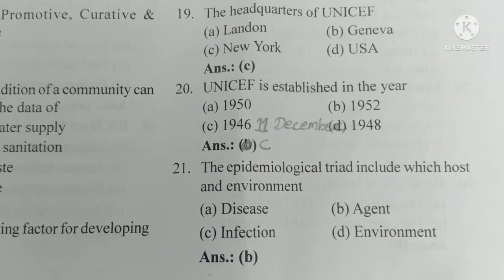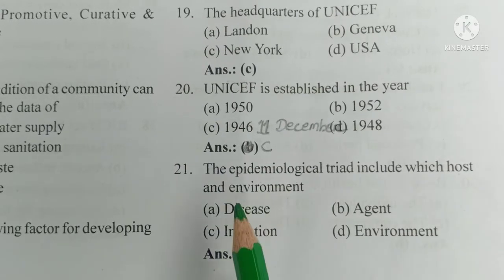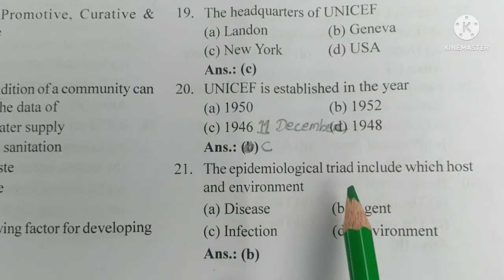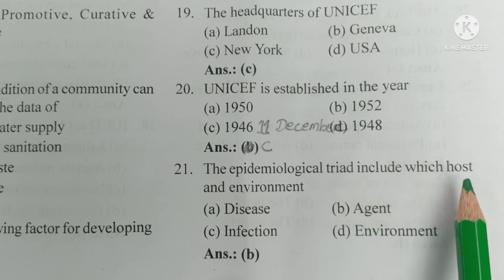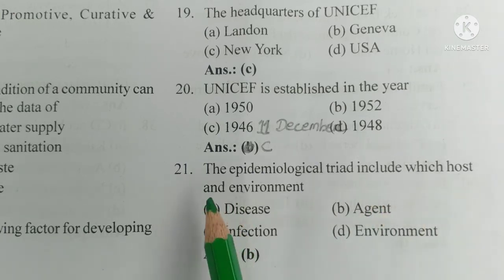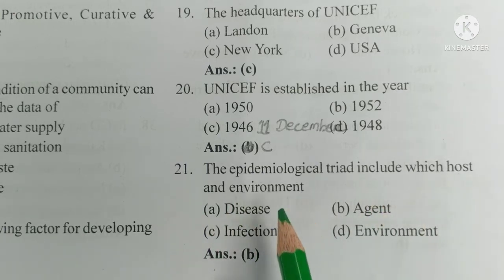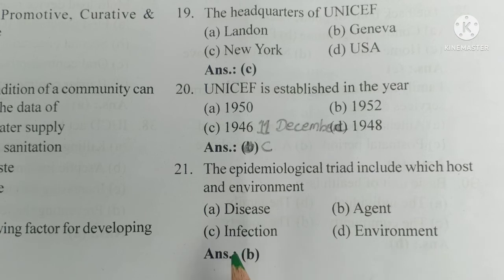Number 21. The epidemiological triad includes which host and environment? Options: A) disease, B) agent, C) infection, D) environment. The answer is B — the epidemiological triad consists of agent, host, and environment.